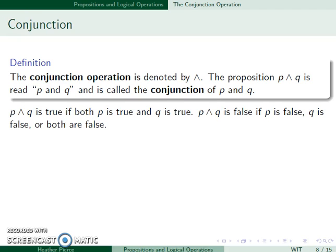P and Q is true if both P is true and Q is true. It's false if either P is false, or Q is false, or both.